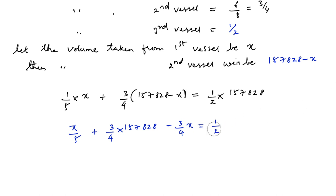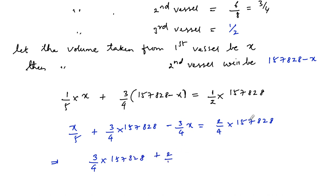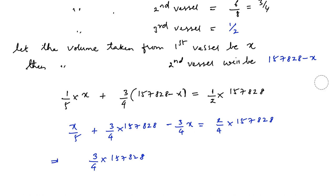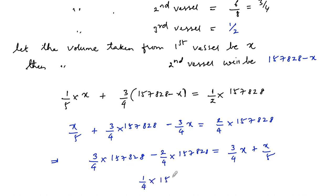We can write this as (3/4)(157,828) minus (2/4)(157,828) equals (3/4)x minus x/5. So (1/4)(157,828) equals (3/4)x minus x/5. Taking LCM of 20: that is 15x/20 minus 4x/20, which gives 11x/20 on the right side.